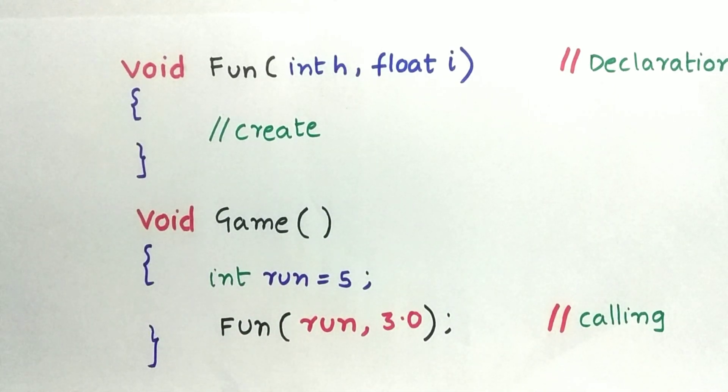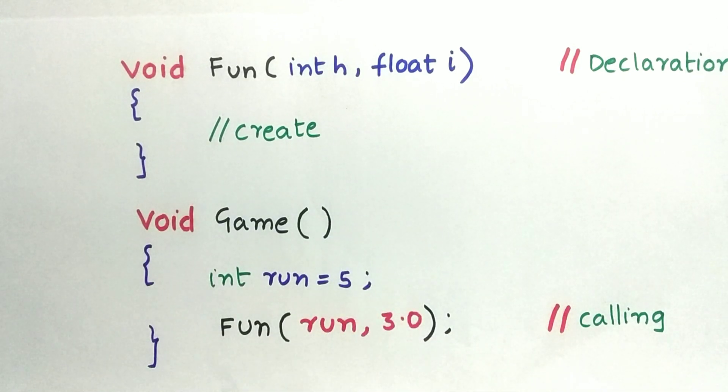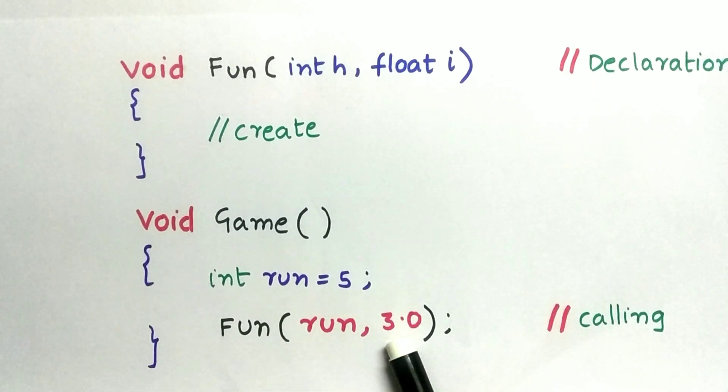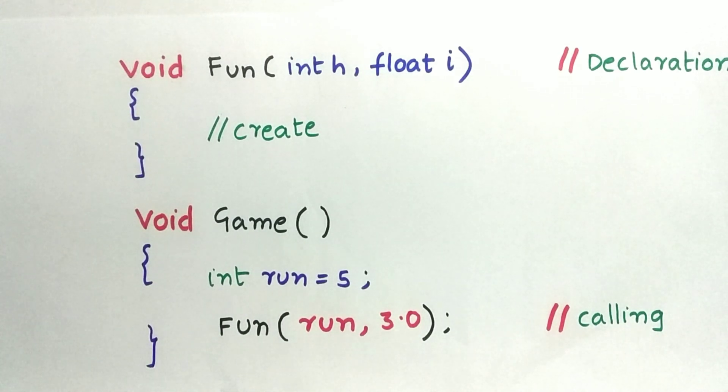Now in method game we are calling the method fun. Here we are using different variables. Run and 3.0 is being used while calling the method fun. So here run and 3.0 are arguments.